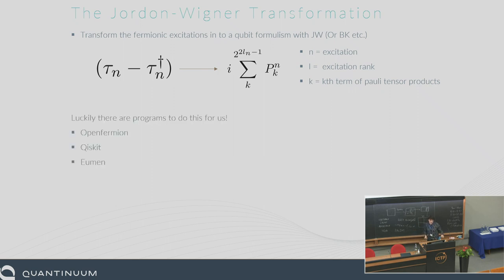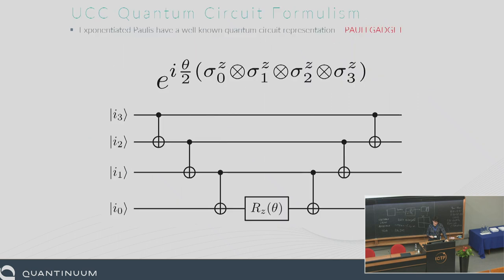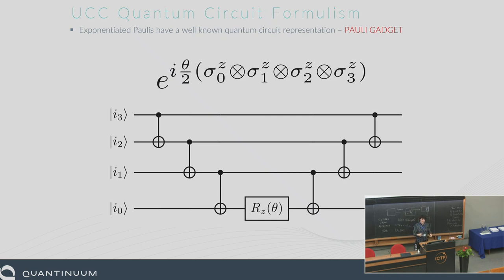There are lots of ways to generate these things — open fermion, InQuanto — but we have to exponentiate these Paulis. Now we've done the Jordan-Wigner transform, we have to exponentiate these Pauli strings. There's a really famous way to do this. If you take one thing away from this lecture, this should be it, because the Pauli gadget is the most powerful primitive in quantum computing, in my opinion. It shows up everywhere, and when you spot it, it's really easy to make algorithms with.